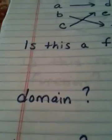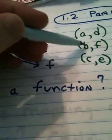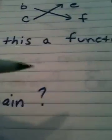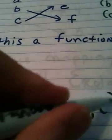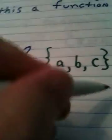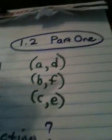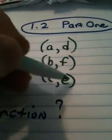Before I answer if it's a function, what is the domain? The domain are always the inputs, the set of inputs. So the domain here would be the set made up of A, B, and C. And the range is always the set of outputs, which in this case would be D, F, and E.